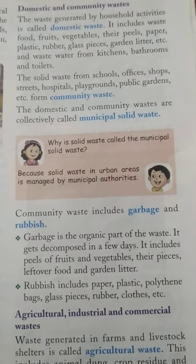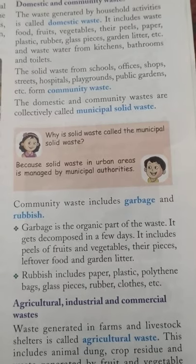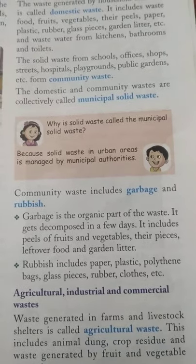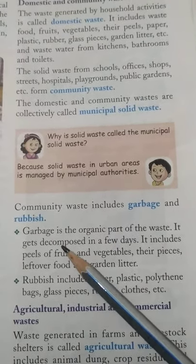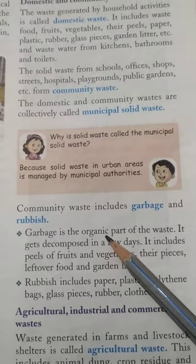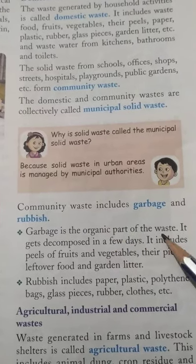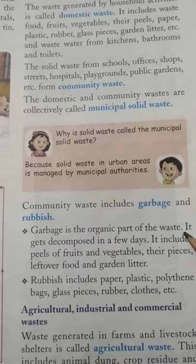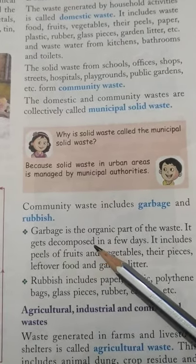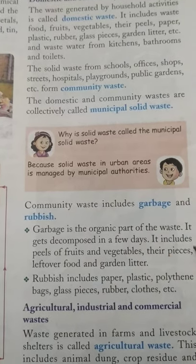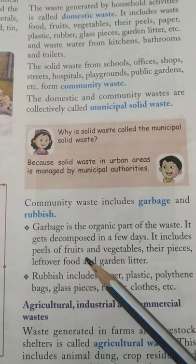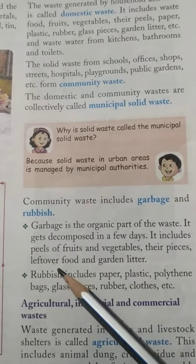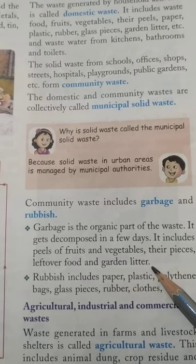Community waste includes garbage and rubbish. Garbage usually means waste containing an organic part. It gets decomposed in a few days, and includes peels of fruits, vegetables, their pieces, leftover food, and garden litter.